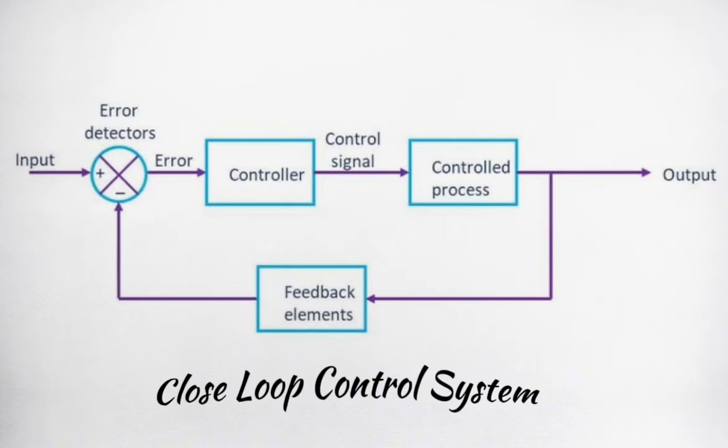In closed-loop control systems, the output is compared to the reference input and an error signal is made.